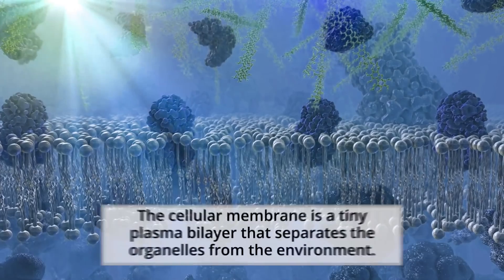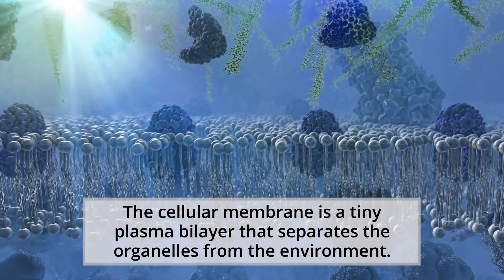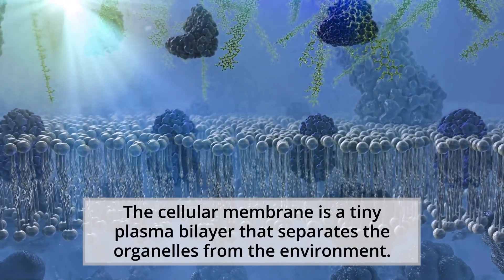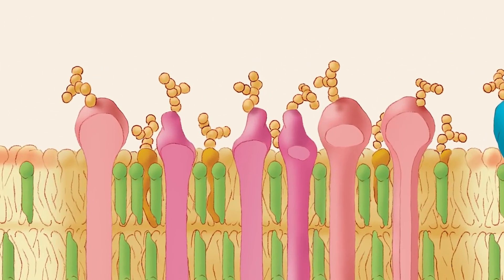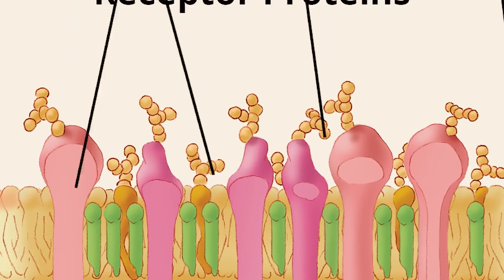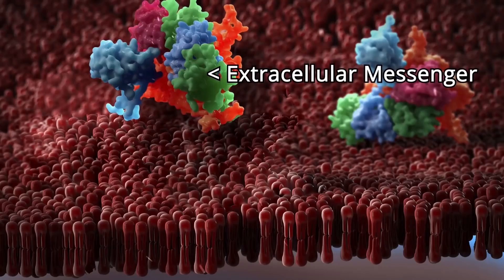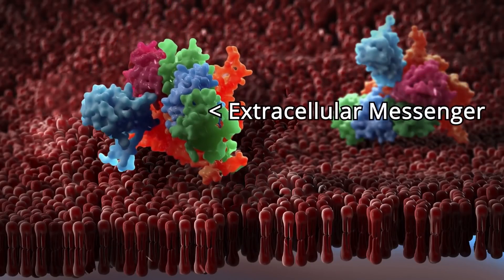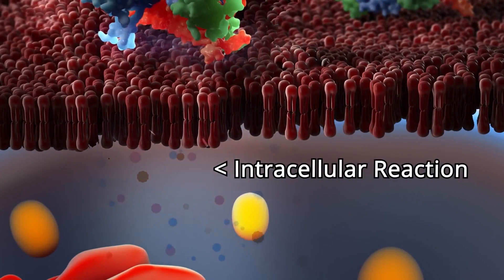The cellular membrane is a tiny plasma bilayer that separates the organelles from the environment. The membrane is covered in hundreds of thousands of little receptor proteins that interpret signals from outside the cell and relay the information back into the nucleus.